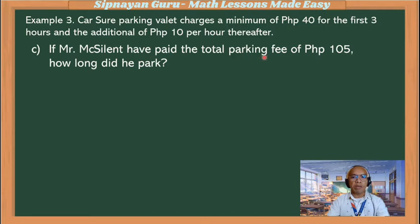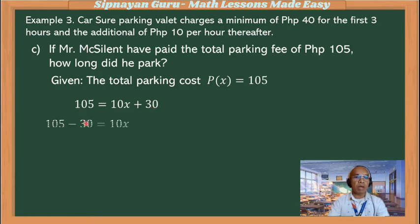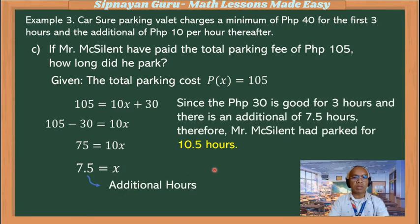If Mr. McSilent paid a total parking fee of 105 pesos, how long did he park? The total parking cost P(x) is 105. So 105 = 10x + 30. By the addition property of equality: 105 minus 30 = 10x, so 75 = 10x. Divide both sides by 10, so x = 7.5. Since the 30 pesos is good for 3 hours and there is an additional 7.5 hours, therefore Mr. McSilent had parked for 10.5 hours.